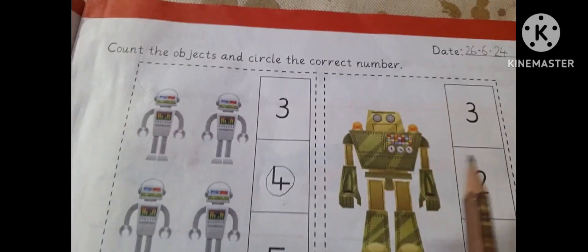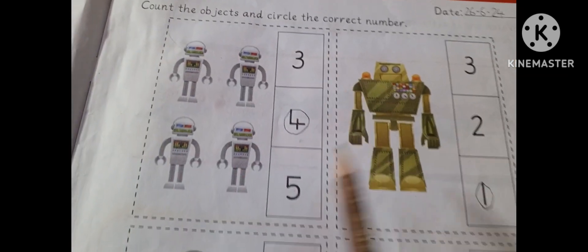Count the objects and circle the correct number. Count it 1, 2, 3, 4. Circle 4, 1, 3 and 2.